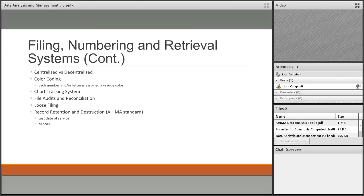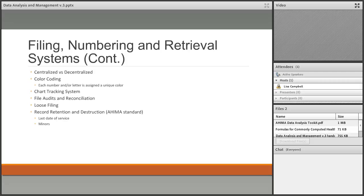A file audit is when we verify that we have the records we say we have. File audits and reconciliation go hand in hand. At the end of the year, you run a report from the master patient index listing all patients discharged that year, give it to staff, and they check off that every chart on that report matches a physical chart in the department. If charts are missing, you check the chart tracking system and out guides to investigate.